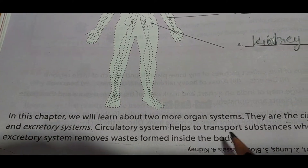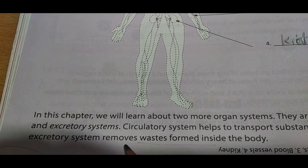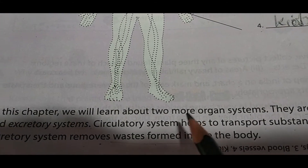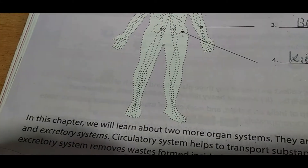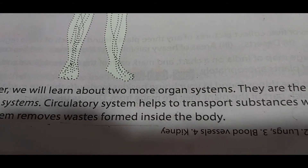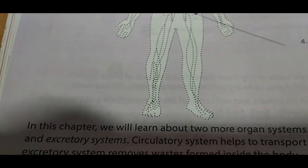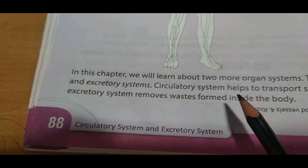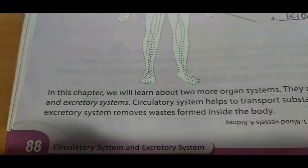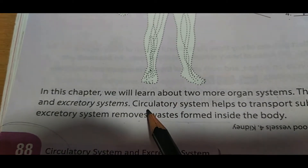The circulatory system helps to transport substances, while the excretory system removes waste from inside the body. The circulatory system helps us to transport, and the excretory system helps us to remove waste from inside the body.